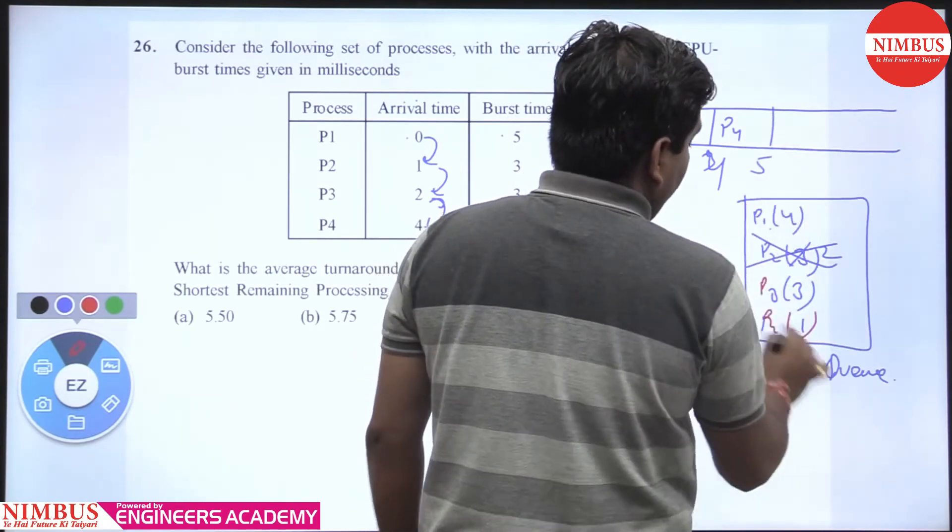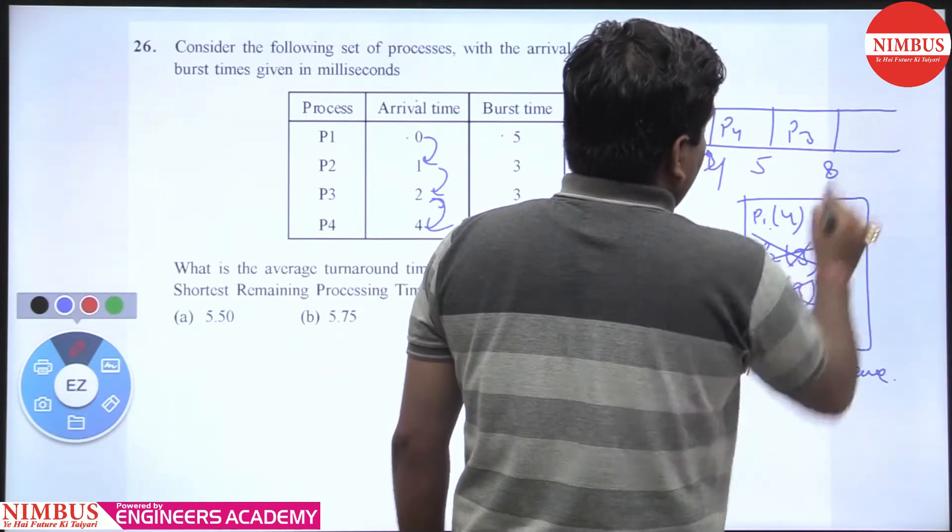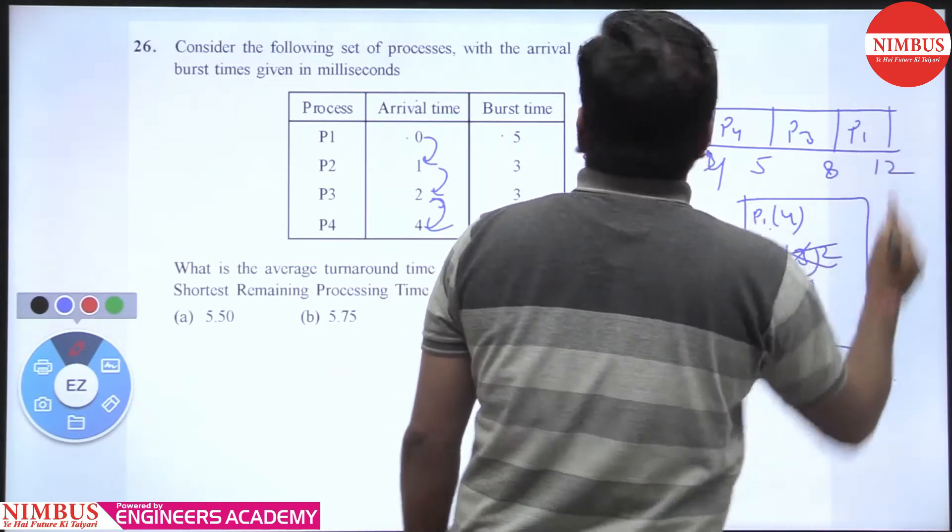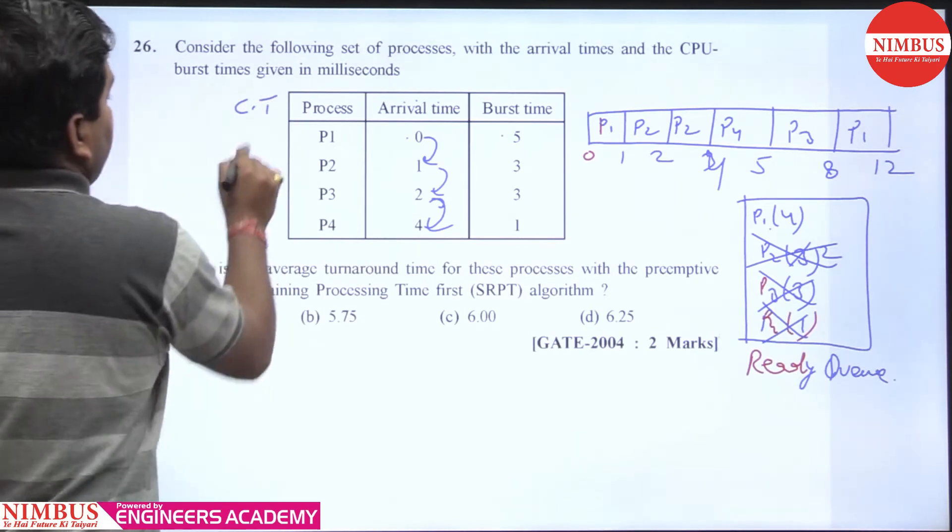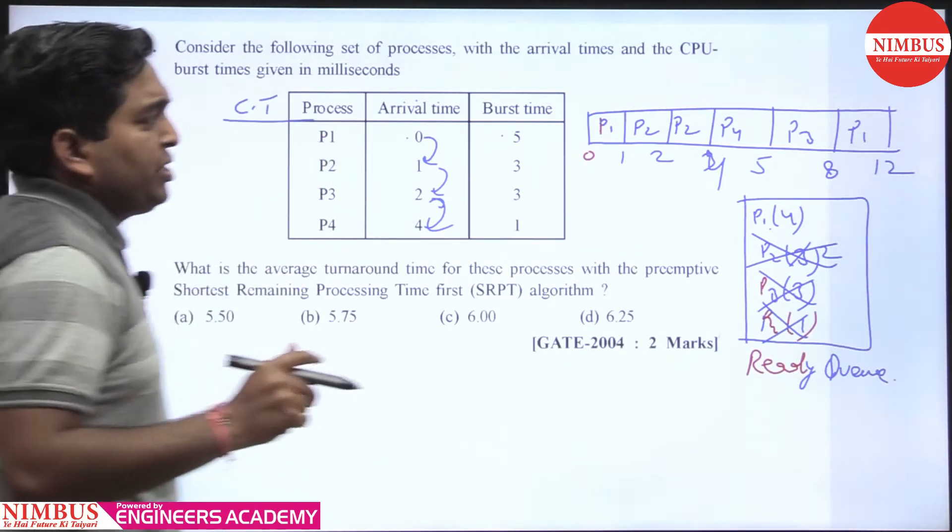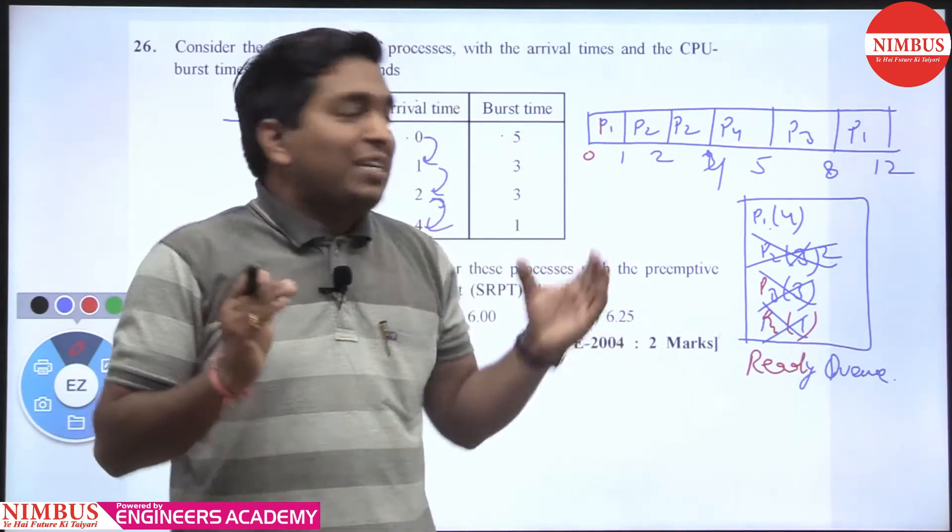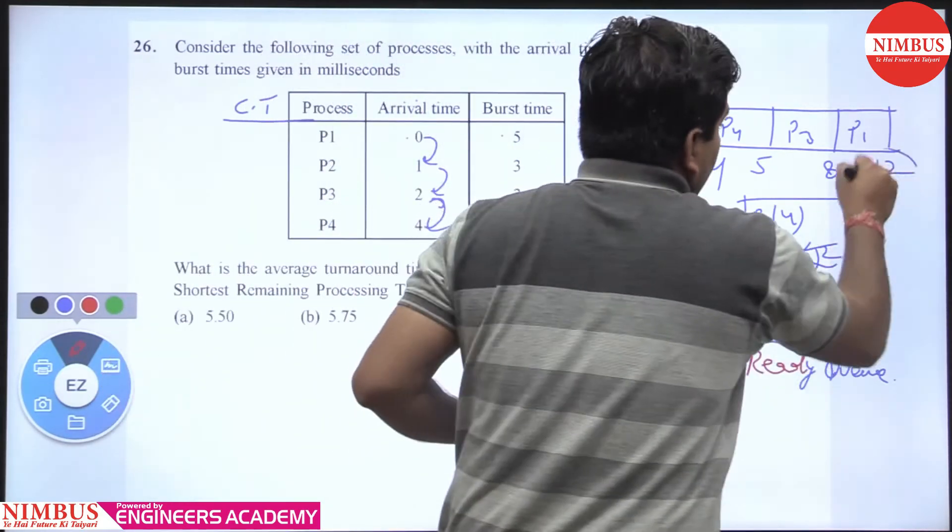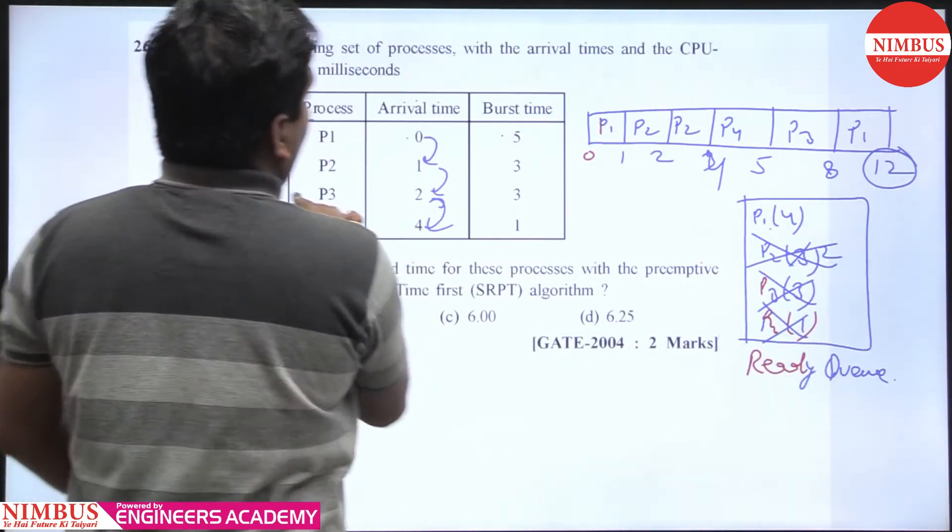Now we calculate the completion time. What is the meaning of completion time? The completion time is the time where the process completes execution. P1 completed at 12, P2 completed at 4, P3 completed at 8, and P4 completed at 5. Then turnaround time, turnaround time is nothing but completion time minus arrival time.